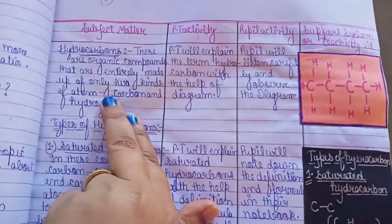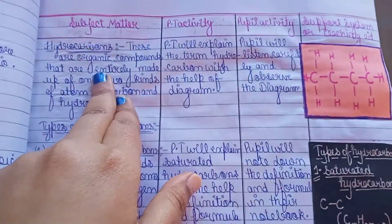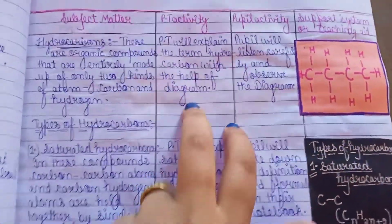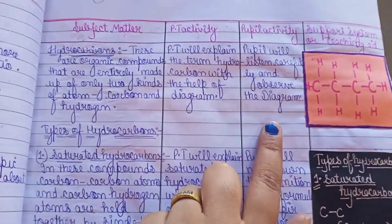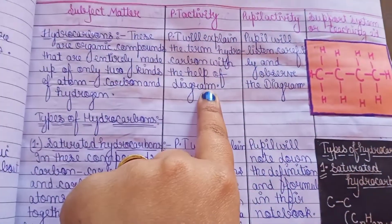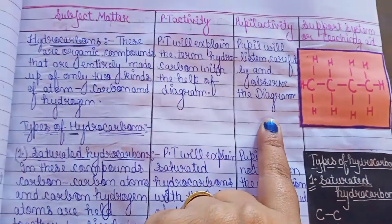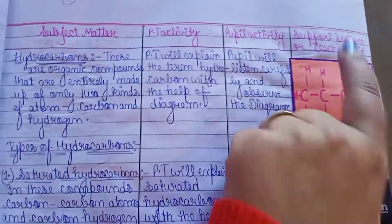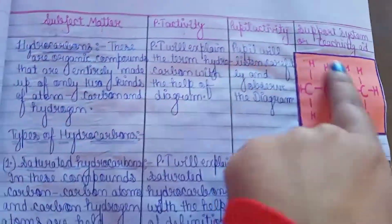Now comes the presentation. We will present our topic. First, we will study hydrocarbon — write the subject matter related to the topic. What did PT do? What did the students do? I have written the definition of hydrocarbon. A diagram is shown, and the children observe the diagram. Here in the support system column, we write the teaching aid used — the chart or diagram that was shown.